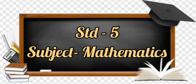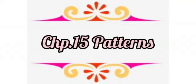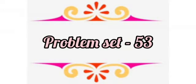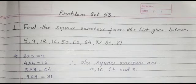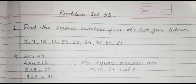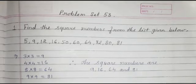Standard 5th Subject Mathematics Chapter 15 Patterns Problem Set 53. Today we will solve questions of Problem Set 53. In this problem set, we will solve the questions based on square numbers and triangular numbers. In the last lecture, we learned about square numbers and triangular numbers. Now let's solve.